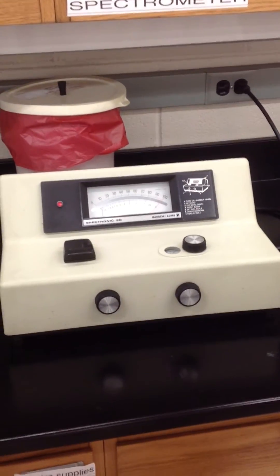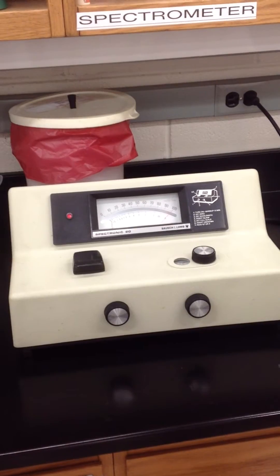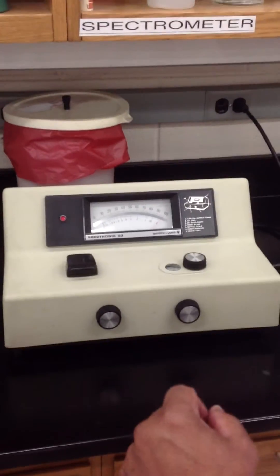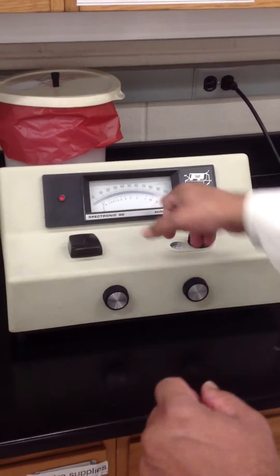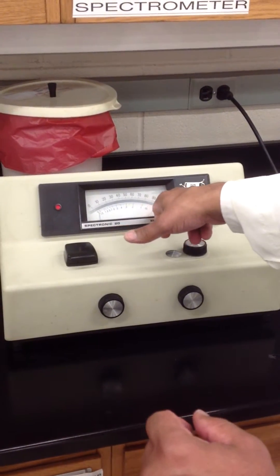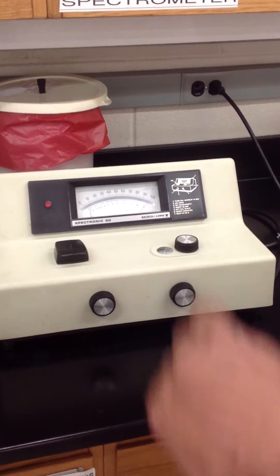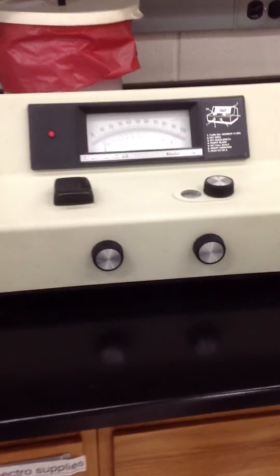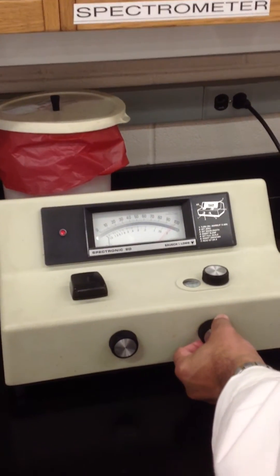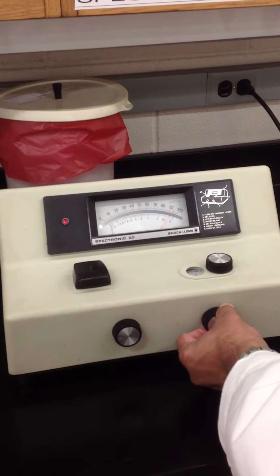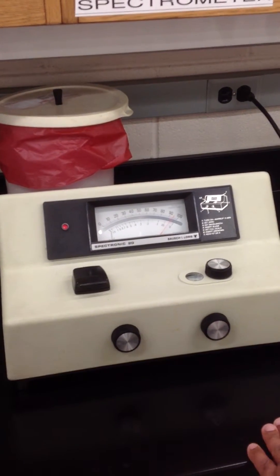So once it's set to zero, and now you want to make sure it's on zero. And when you read, you're going to read it to the closest. So you can see the absorbent scale goes from zero to two only. That's why I plotted on there, zero to two. So you're going to read it to the nearest, so if it's right here, like that, what would you read it as?